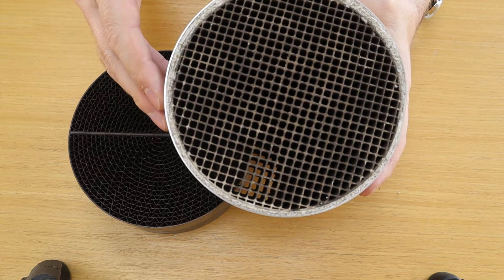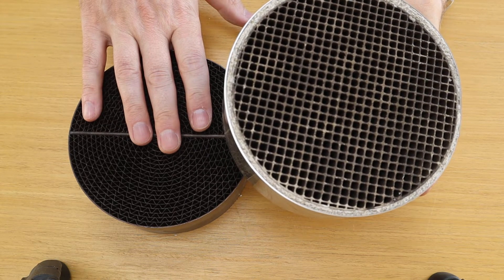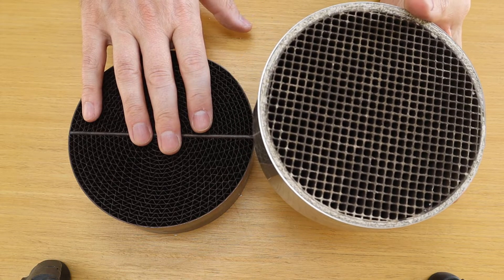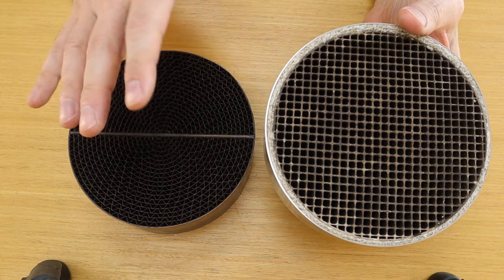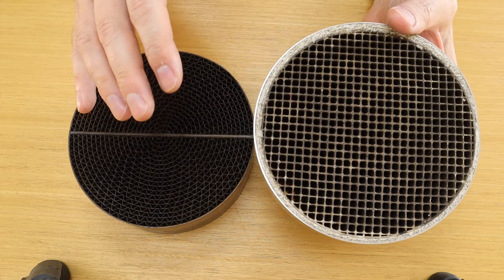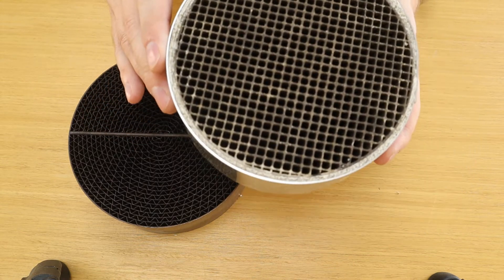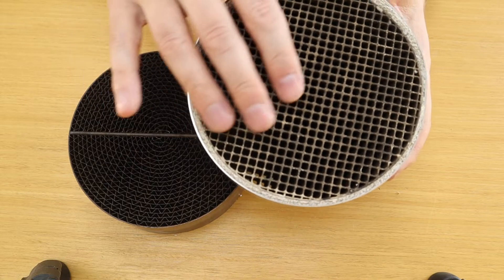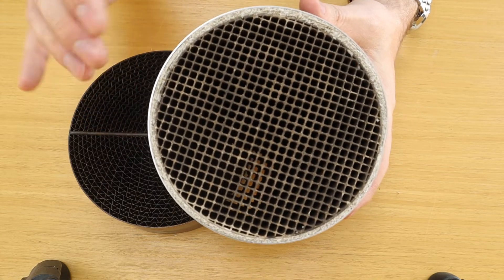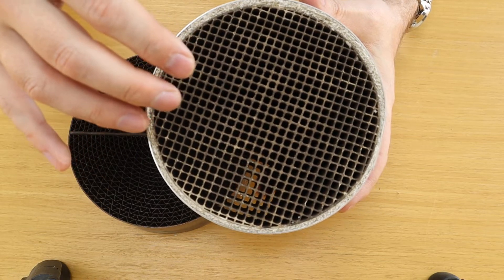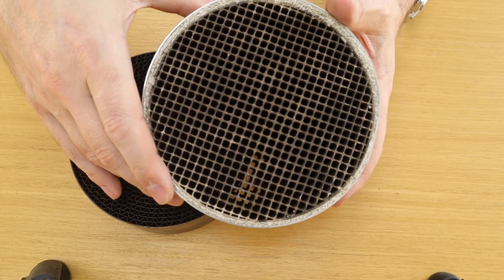The ultimate goal, of course, is to get your full 12,000 hours of useful lifespan out of a combustor. You can get that out of a ceramic; however, it is more susceptible to those temperature fluctuations that lead to the cracking and ultimate crumbling of the substrate.